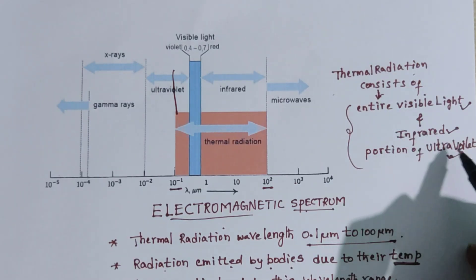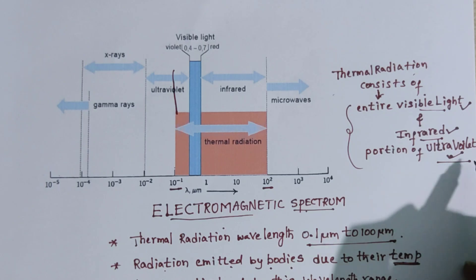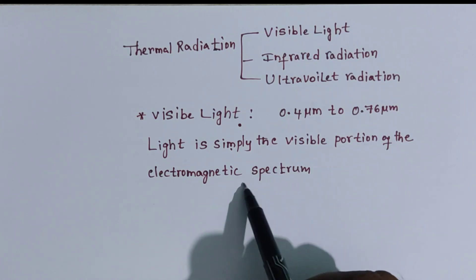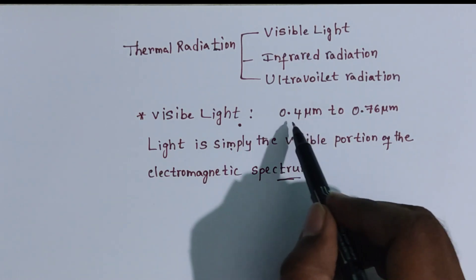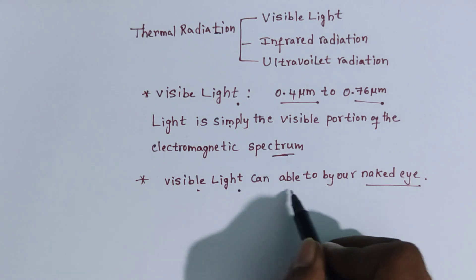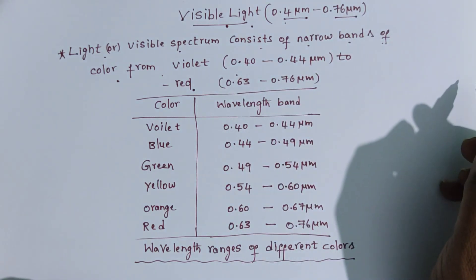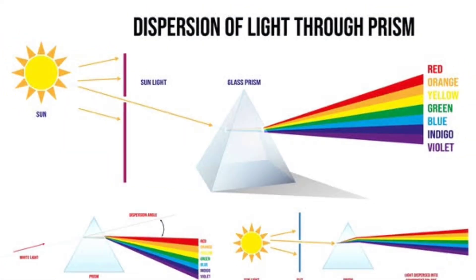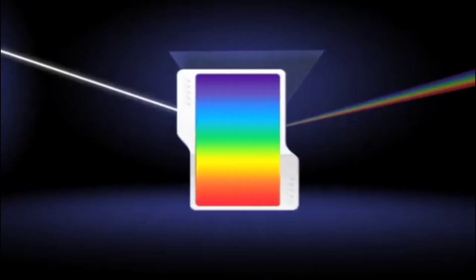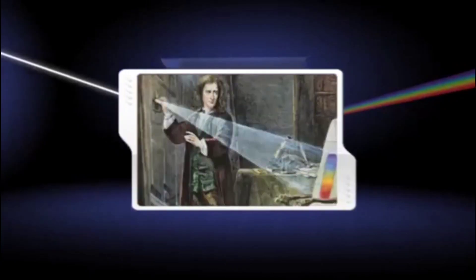Each component can be explained in detail — visible light, infrared radiation, and ultraviolet radiation. Visible light is simply the visible portion of the electromagnetic spectrum. It extends from 0.4 micrometer to 0.76 micrometer wavelength and can be seen by the naked eye. The sun's visible light appears white but is really the combined light of the individual rainbow colors, with wavelengths ranging from violet at 380 nanometers to red at 700 nanometers.